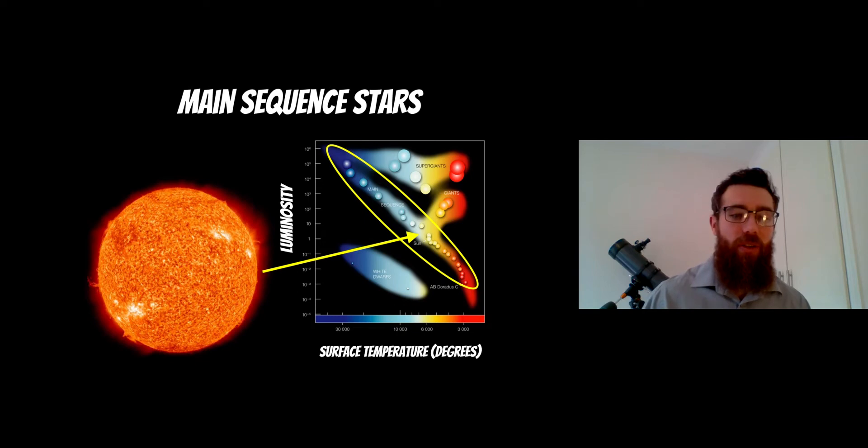If you're not familiar with HR diagrams and stars on them you can check out the video at the top. But the sun sits approximately midway through, the larger stars sit towards the upper left and the lower mass stars sit towards the lower right.